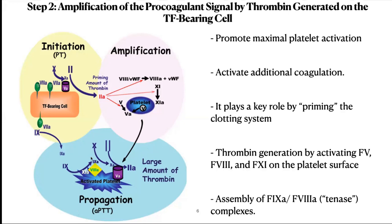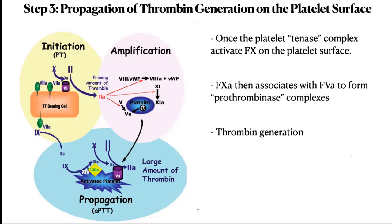This priming is for subsequent bursts of platelet surface thrombin generation by activated factor V, factor VIII, and factor XI on the platelet surface. Factor IX, activated both on the tissue factor-bearing cells and by platelet surface factor XIa, binds to factor VIIIa on the platelet surface to assemble factor IXa–factor VIIIa complexes. Once the platelet is assembled, factor X from the plasma is activated to factor Xa on the platelet surface, and factor Xa then associates with factor Va to form a prothrombinase complex and produce a burst of thrombin generation, helping in coagulation and stopping of bleeding from the injury site.